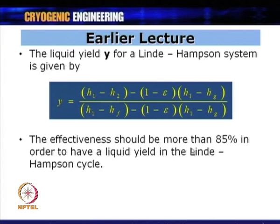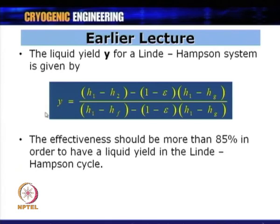The effectiveness must be more than 85 percent to obtain a liquid yield in the Linde-Hampson cycle. When epsilon drops below 85 percent, y approaches zero. Therefore, the heat exchanger effectiveness should be much higher than 85 percent — normally around 95 percent or above — to obtain a significant liquid yield.